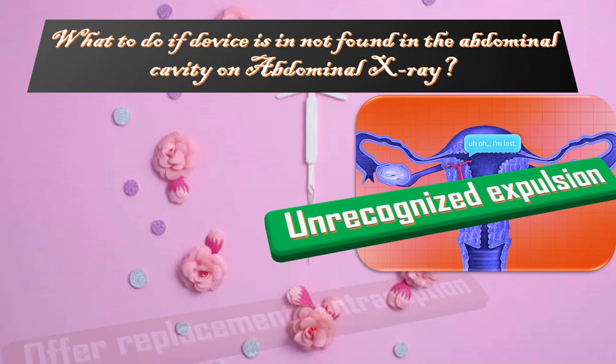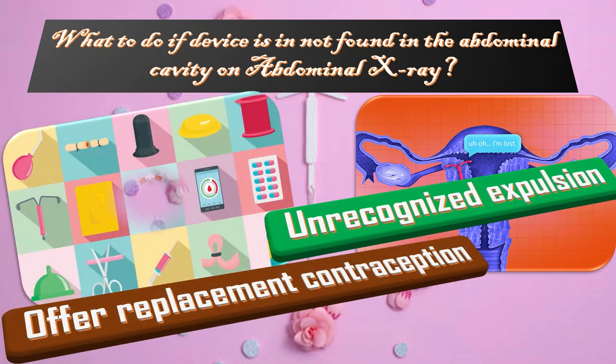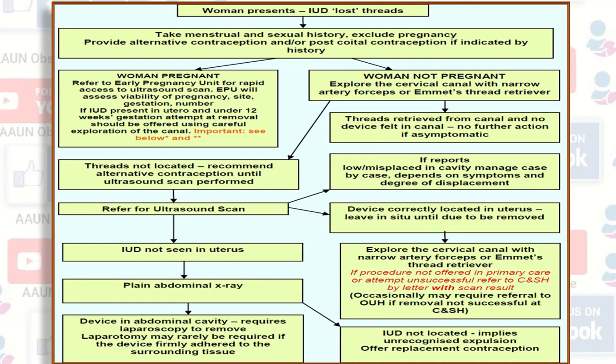If the device is not found, this implies unrecognized expulsion and replacement contraception should be offered. This algorithm is from the NHS hospital guideline on the management of misplaced IUCD.